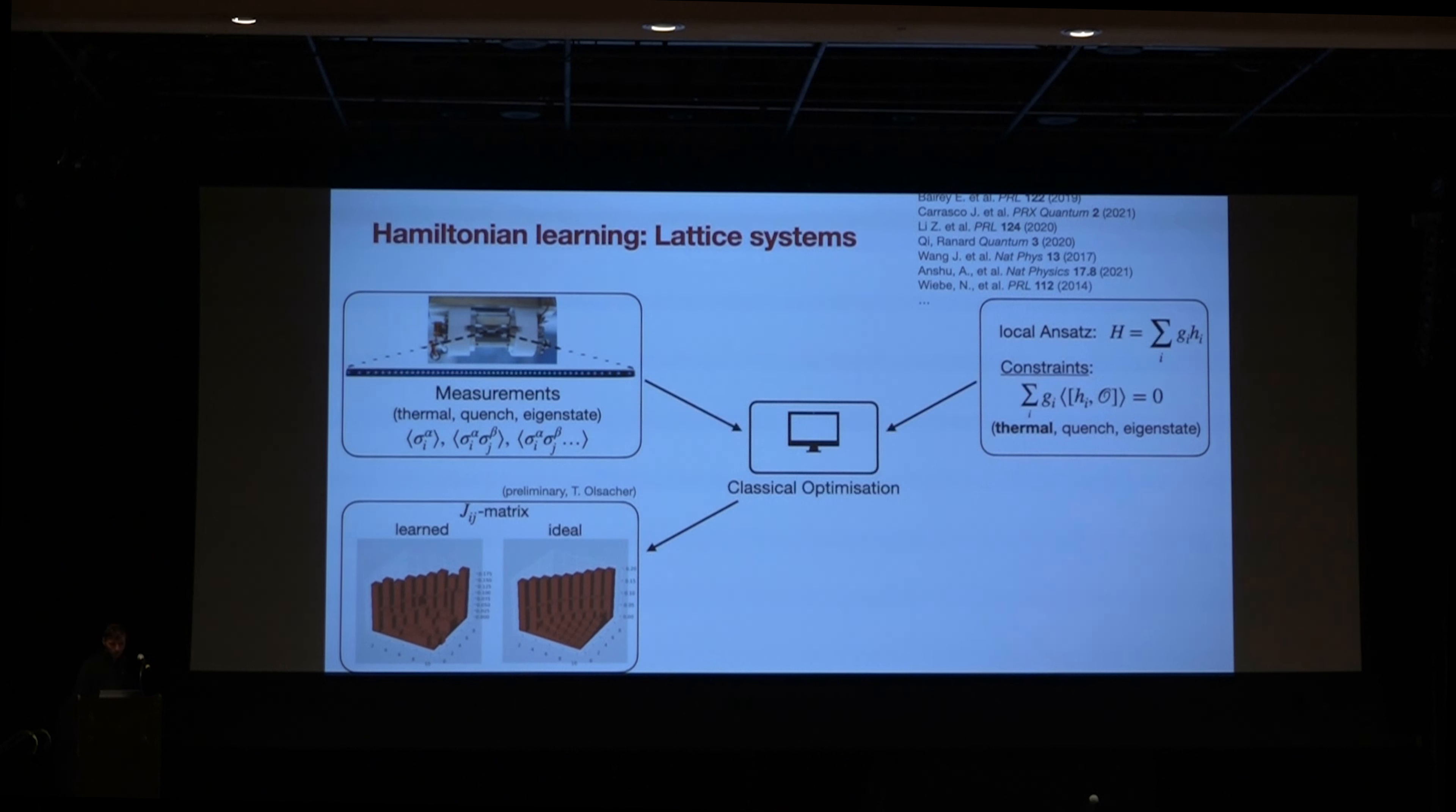And then we use the opportunity to also advertise some other recent work in Innsbruck. So you can extend this story to dissipative systems, because it's very valuable to be able to characterize also the environment and errors in such a setting. And furthermore, you can learn more about the structure of quantum systems by looking at subsystems and learning entanglement Hamiltonians rather than Hamiltonians.